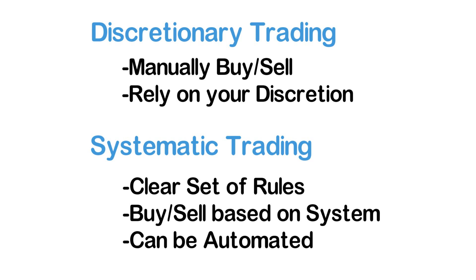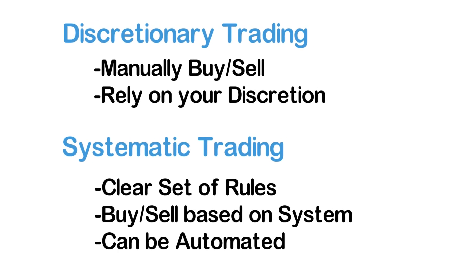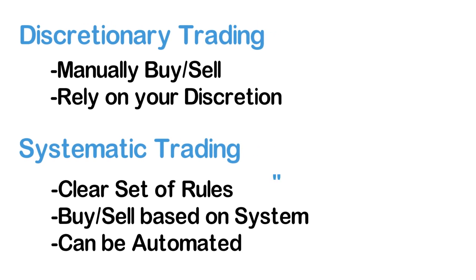Let me give you a simple example to show you the differences in a systematic versus discretionary trading approach. A discretionary and systematic trader both want to buy a given stock in case of an uptrend. A systematic trader would have a very specific set of rules, such as the 200-day simple moving average being below the 50-day simple moving average, for identifying an uptrend.